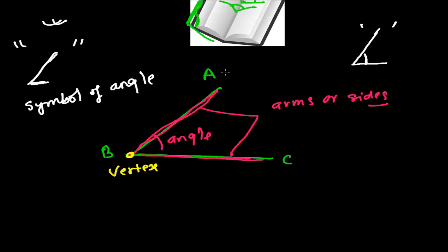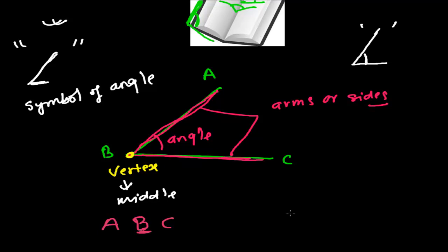Now let's learn how to name an angle. Suppose we have angle ABC — or you can say CBA. The key rule is: the vertex should always be at the middle. So you write A, then B, then C — that is angle ABC. Or you can write C, B, A — that is angle CBA. Either way, B is the vertex and stays in the middle.